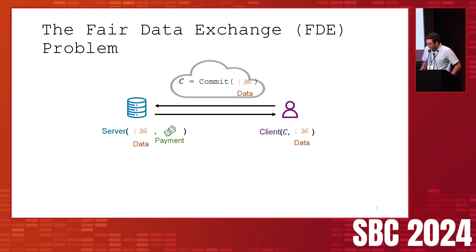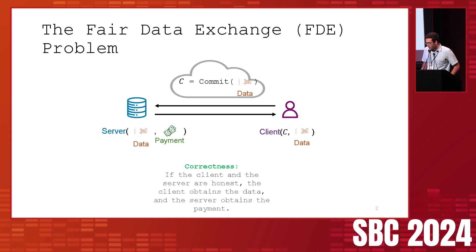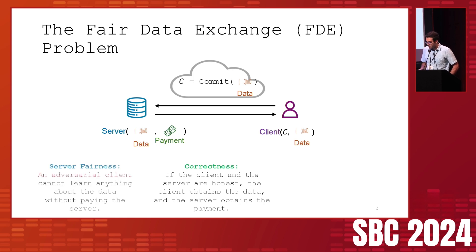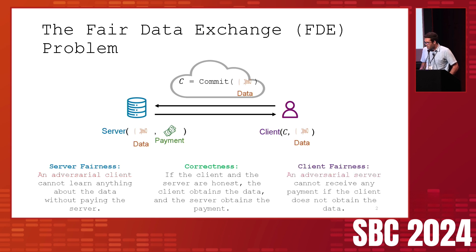We would like any protocol achieving this to satisfy three main properties. First, correctness: if both parties are honest, the client obtains the data and the server obtains the payment. Second, server fairness: an adversarial client should not learn anything about the data without paying the correct amount. Third, client fairness: an adversarial server should not receive any payment if the client does not obtain the data underlying the commitment.